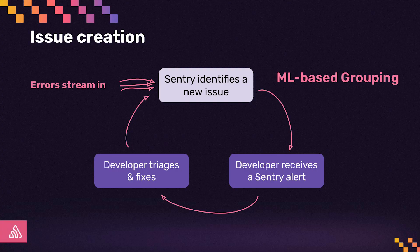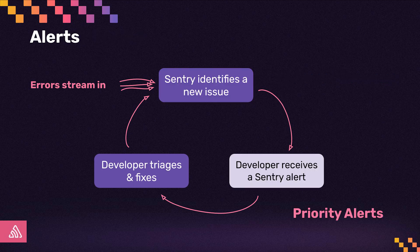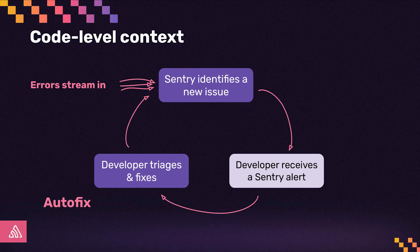We're starting with the beginning of our data pipeline, where we're improving the quality of our grouping algorithm responsible for generating the issues in your Sentry feed. Next, we're using AI and ML to better prioritize and filter out the noise from alerts. Finally, we'll introduce AutoFix, which is our generative AI solution to issue resolution.